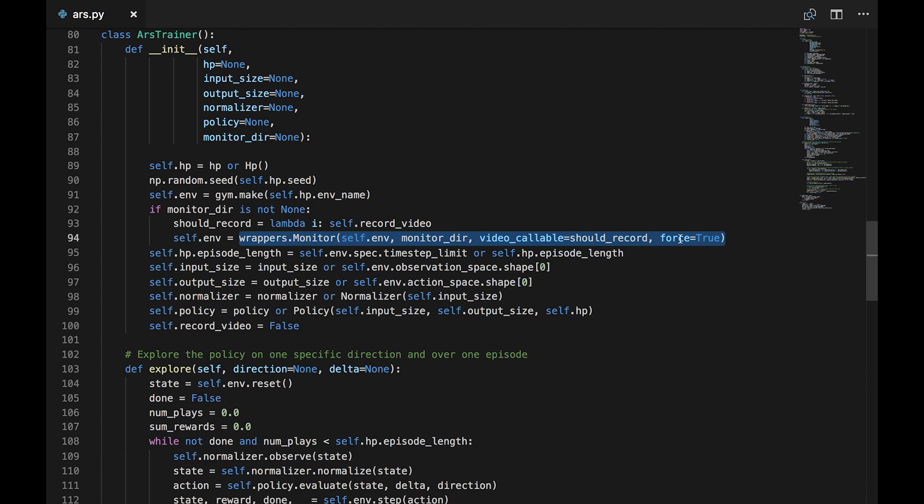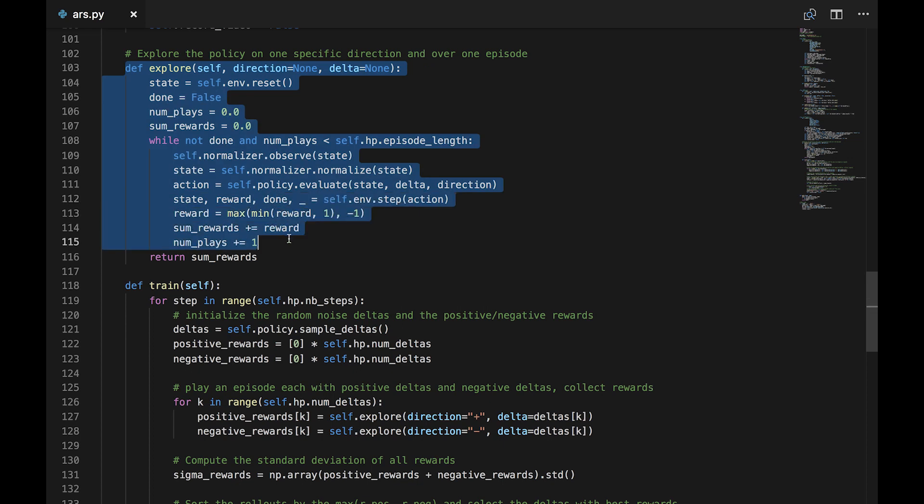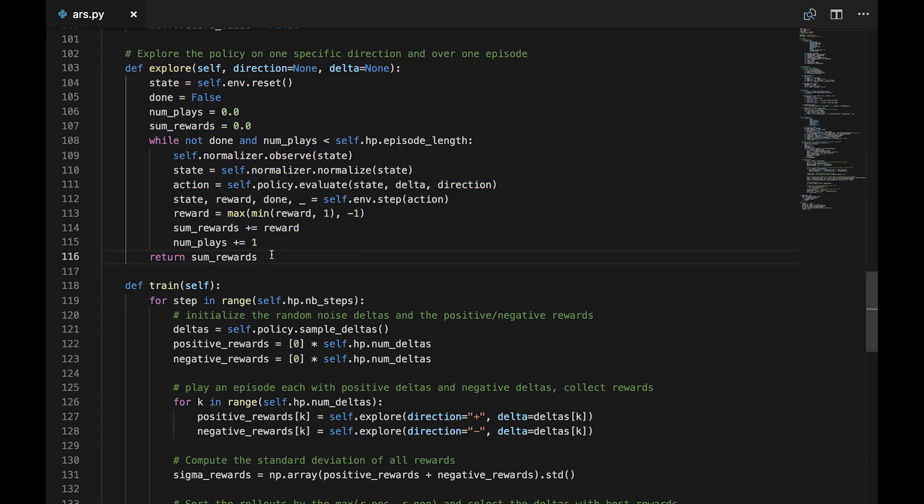The explore function runs one episode in one particular direction, positive or negative, and returns the sum of the rewards accumulated. Note that we're clipping the reward between negative one and one, which prevents outliers from distorting our weights.